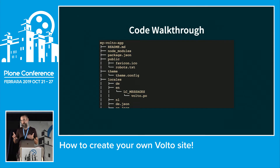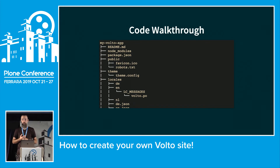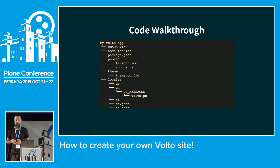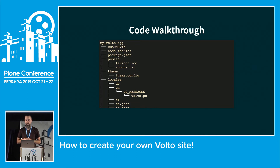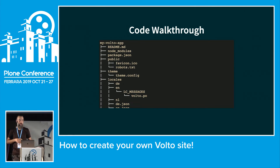The constants folder contains constants like available languages and Redux action types. The customization folder works in the same way as jbot in Plone — if you match the directory structure of Volto it will override that file in your custom project. You can quite easily replace the logo, a specific template, or a specific view.